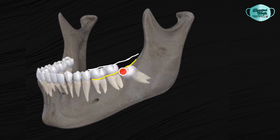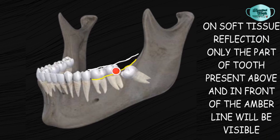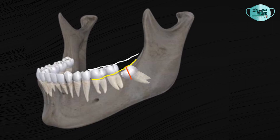The amber line has two important functions. First, it helps in determining the amount of tooth enclosed by the alveolar bone. Second, when the soft tissue is elevated, only the part of the tooth present above and in front of this amber line will be visible; the rest will be covered by bone. The R in WAR lines stands for the Red line, which is drawn perpendicular to the amber line, dropped to the point where the elevator will be applied.